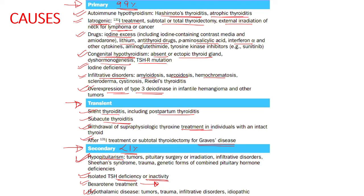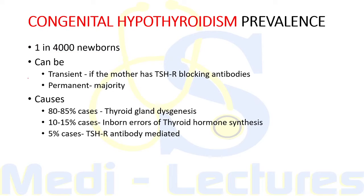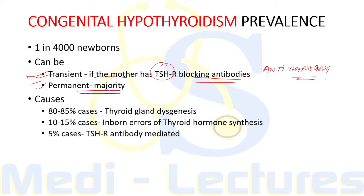Congenital hypothyroidism occurs in one in four thousand newborns. It can be transient if the mother has TSH receptor blocking antibodies or received antithyroid drugs, but permanent hypothyroidism occurs in the majority of newborns. Considering the causes, 80 to 85% of cases are due to thyroid gland dysgenesis, 10 to 15% are due to inborn errors of thyroid hormone synthesis, and 5% are due to TSH receptor antibody mediation.